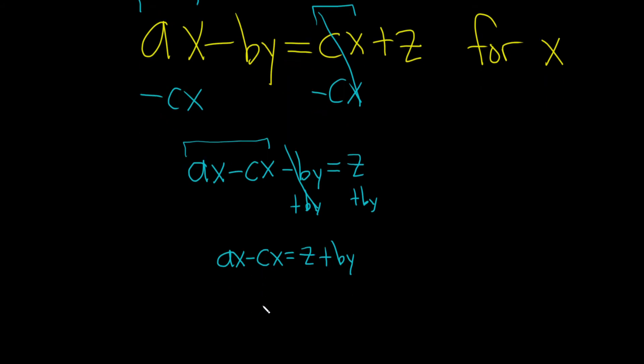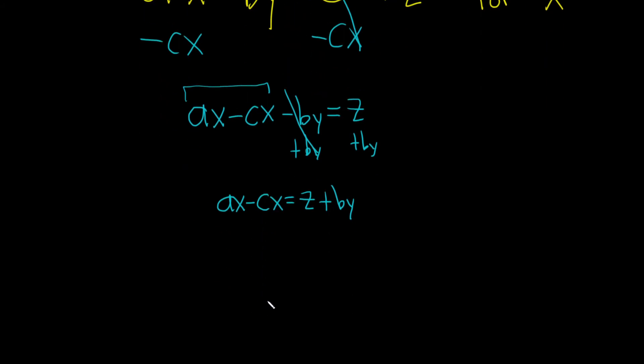Almost there, right? So we have everything with an x on one side, so now what we can do is we can factor out an x like this. X, parentheses, and the question you ask is, what do you multiply by x in order to get ax? Well, a. And then what do you multiply by x in order to get negative cx? Negative c. And that's equal to z plus by.